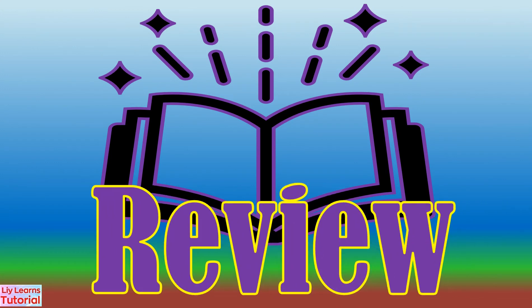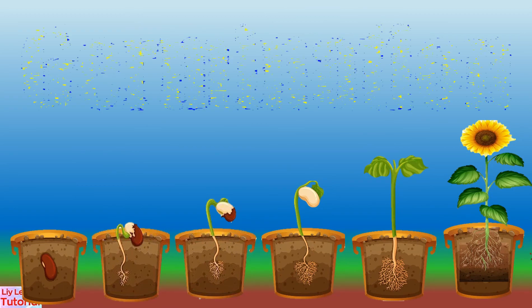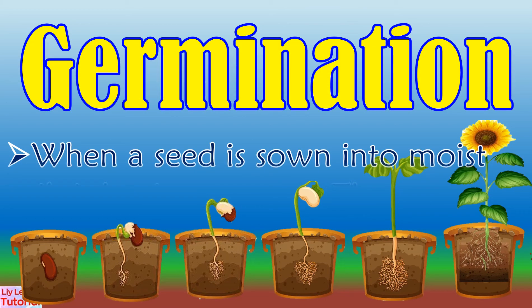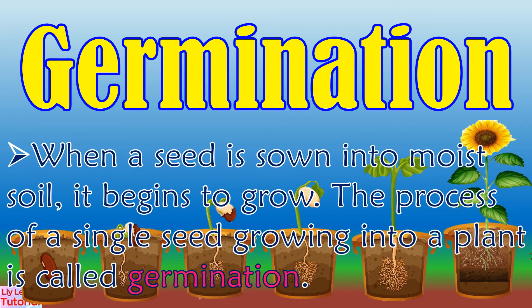Let's review! Germination: When a seed is sown into moist soil, it begins to grow. The process of a single seed growing into a plant is called germination.